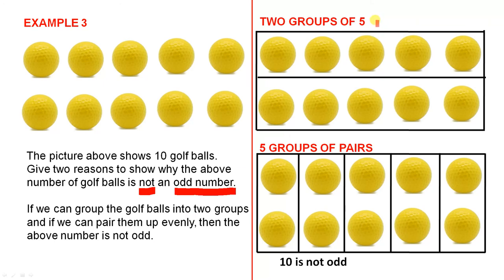Right, let's try and do two groups of five and look at this. There's one group of five, there's another group of five, nothing left over. That proves that ten is not odd because you don't have anything left over.